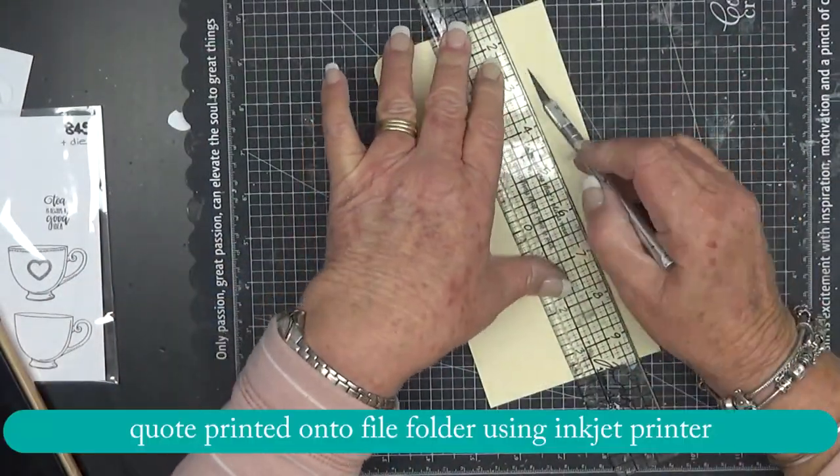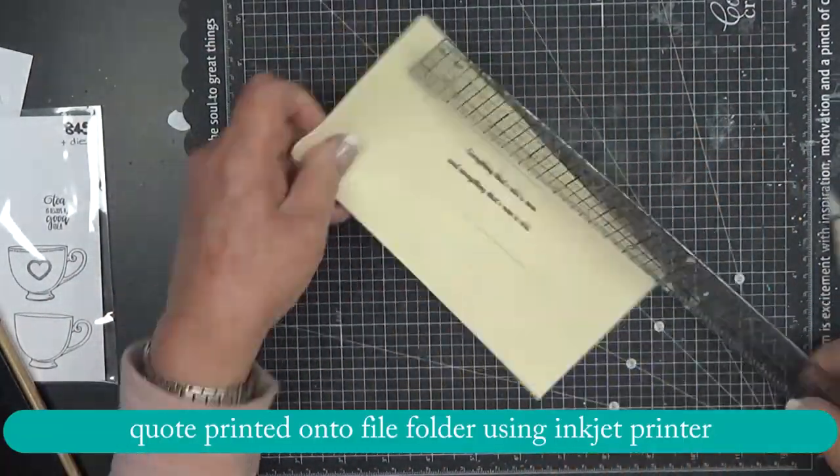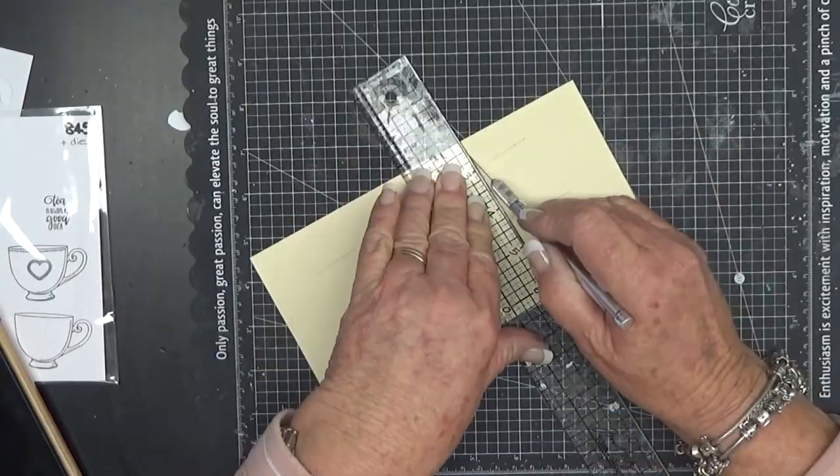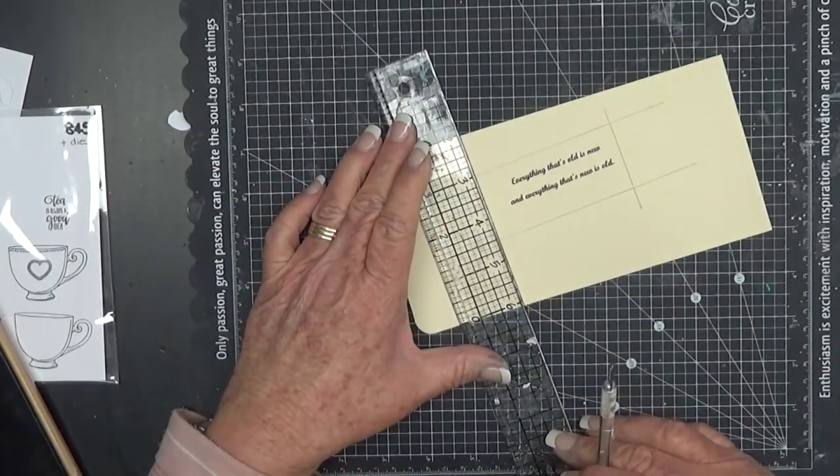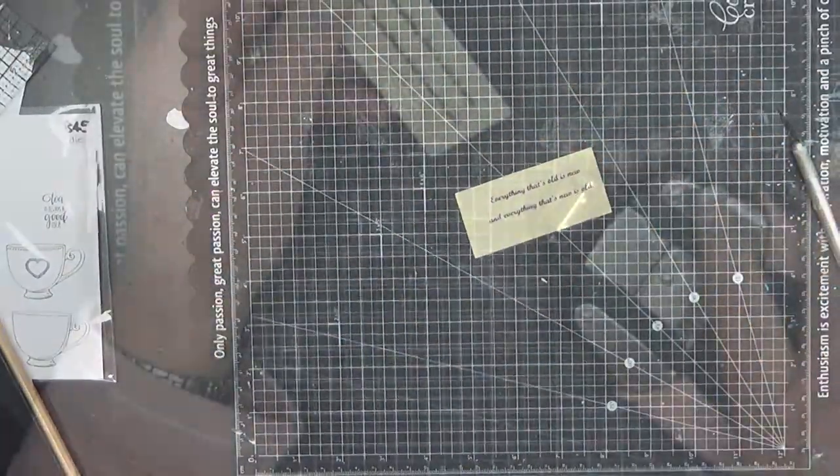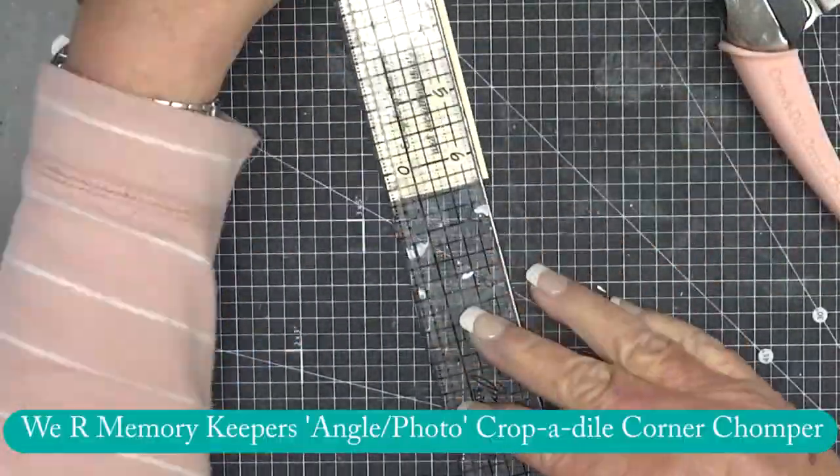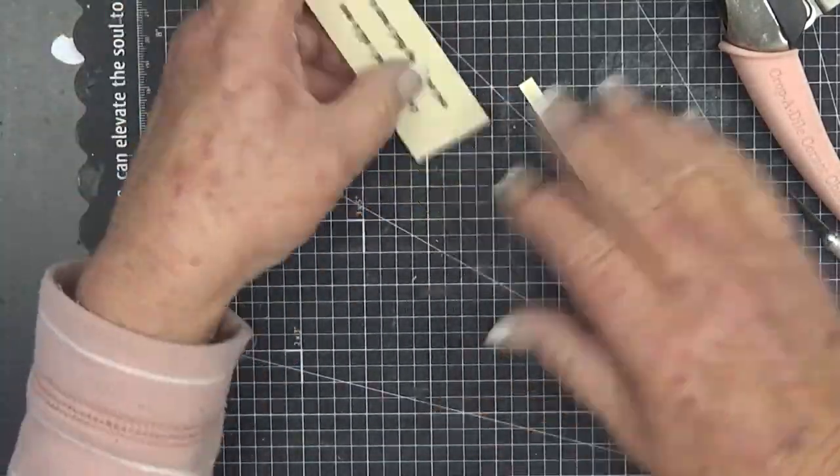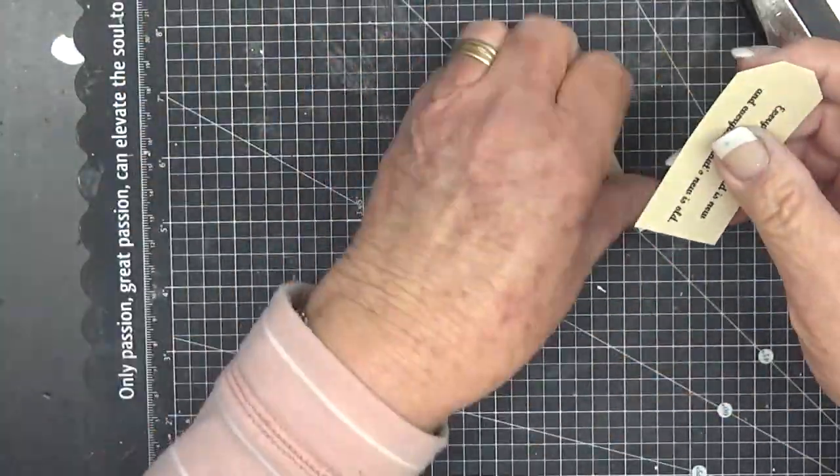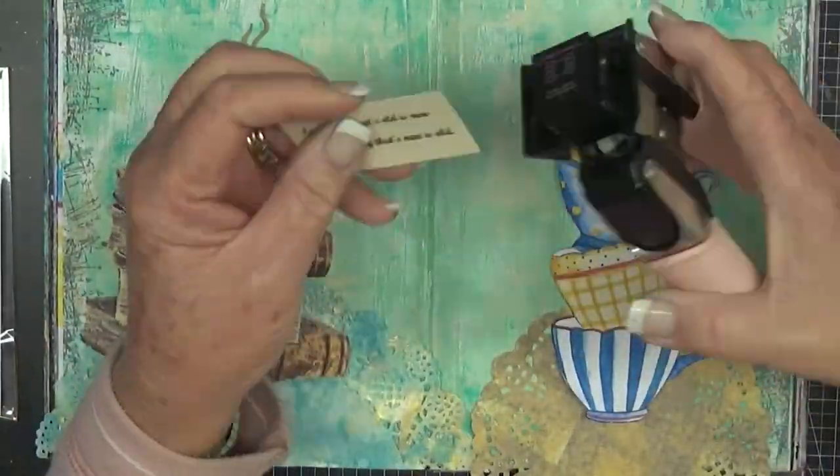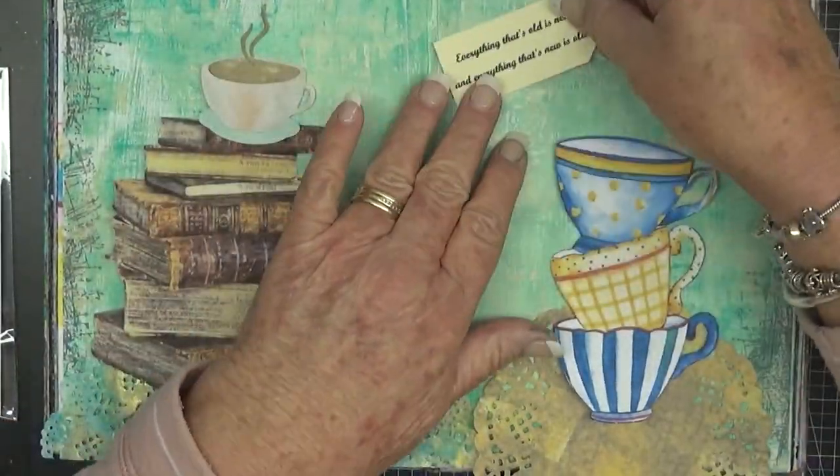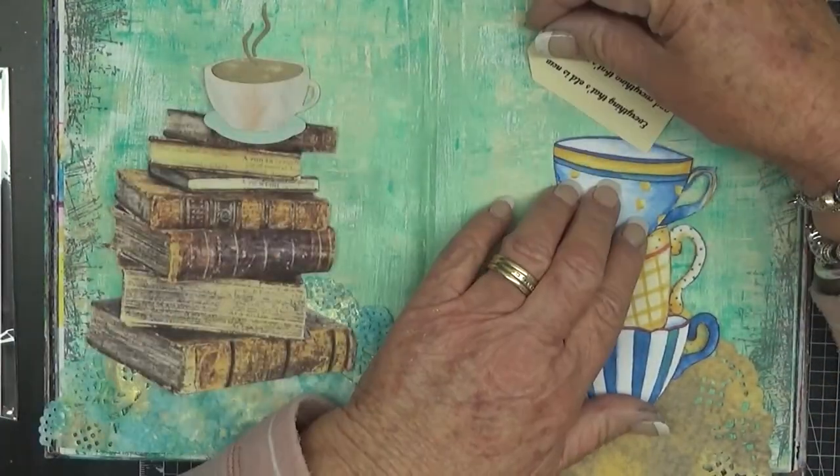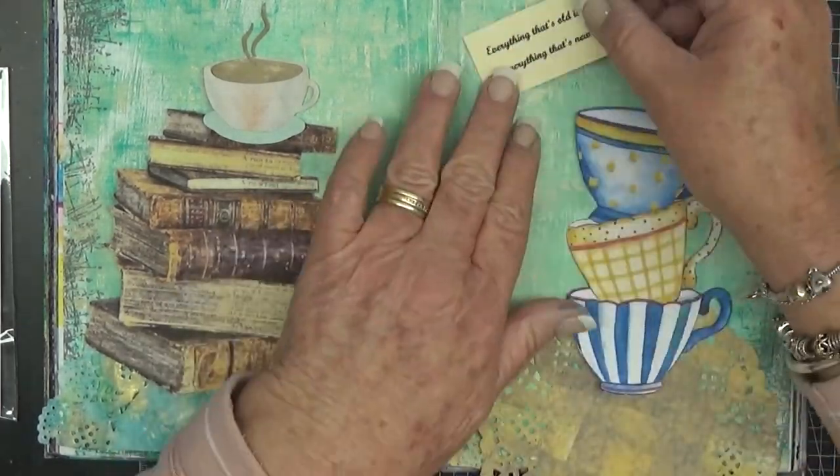Now I have to make the tea bag. So I used a file folder, printed the quote onto it using the inkjet printer. And that was the WIA Memory Keepers Cropidile Corner Chomper and I used the angle.